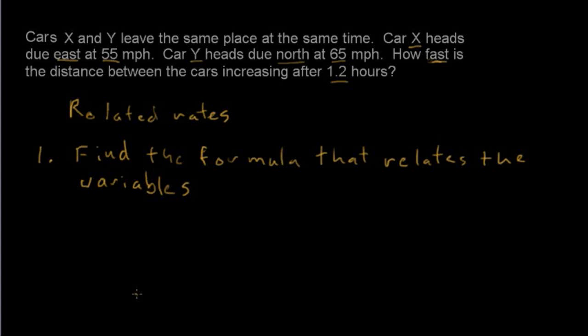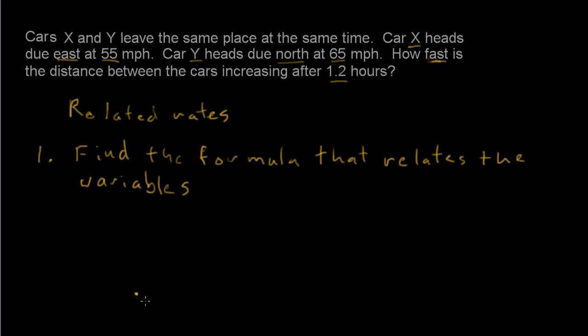You may recognize this as a related rates problem, and the first step in a related rates problem is to find the formula that relates the variables. It's always a good idea to make a sketch of what's going on, and so we have this car X that's traveling east, which would be to the right,